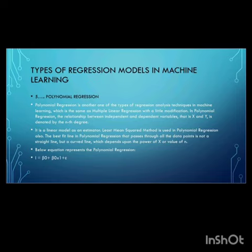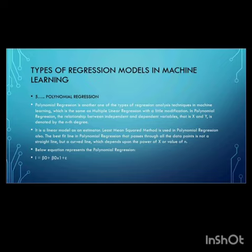along with feature selection. The fifth one is polynomial regression. Polynomial regression is another type of regression analysis technique in machine learning, which is the same as multiple linear regression with a little modification. In polynomial regression, the relationship between the independent and dependent variables, that is x and y, is denoted by the nth degree.